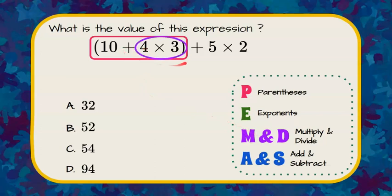So we look inside the parentheses and we have a multiply. The first thing we have to do in the parentheses is 4 times 3, which is 12. So let's rewrite our expression. This will be 10 plus 12 because 4 times 3 is 12. Everything else remains the same for now.